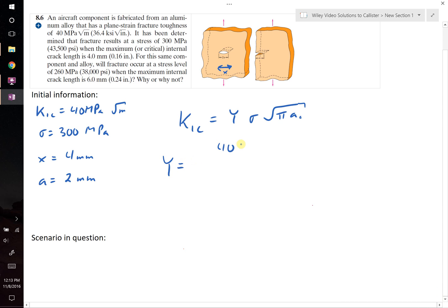When we solve for y, we find that it is equal to 40 MPa root meters divided by 300 MPa times the product of the square root of pi times 0.002 meters. Notice, I converted 2 mm into meters to make sure that the meters and the MPa cancel. Thus, we end up with a material scaling parameter which has no units, and it's equal to 1.682.